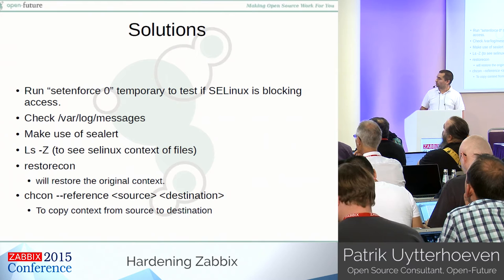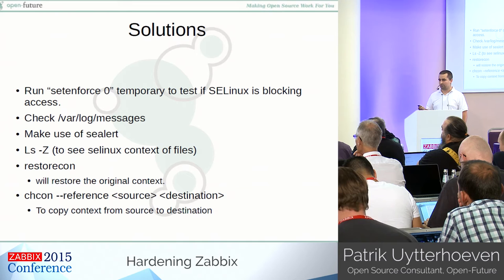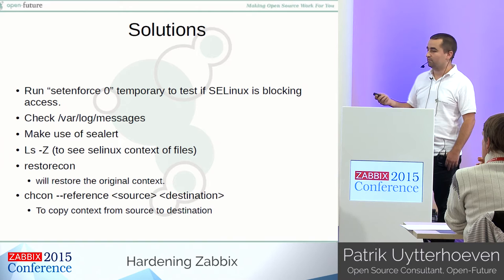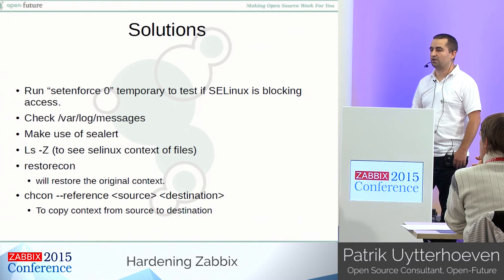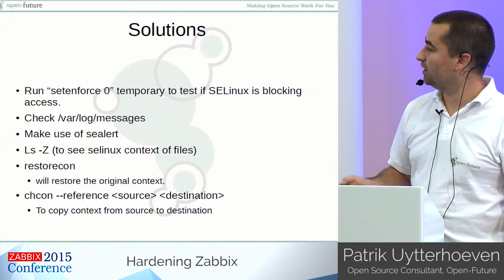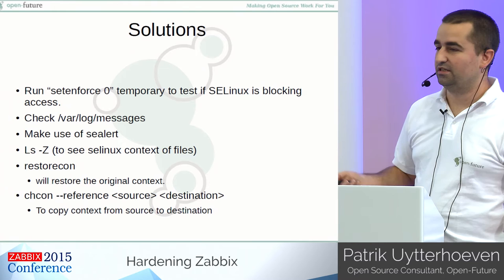So if you run into problems, there are a few solutions. First of all, keep SELinux activated. If you have some strange behaviors and you think everything is okay, maybe it's SELinux — just run `setenforce 0` temporarily to see if the problems go away. If your problem goes away, go back to the audit file and check it to see if there are any issues you can resolve by creating your own module. Or you can go to the list of already pre-created modules for SELinux. Also check `/var/log/messages` — SELinux writes a lot of information there too. Make use of `sealert`.